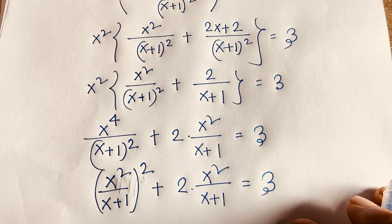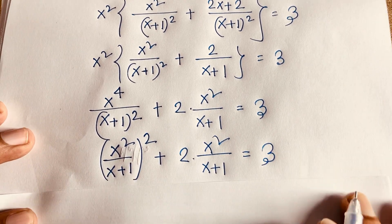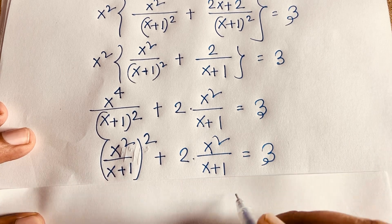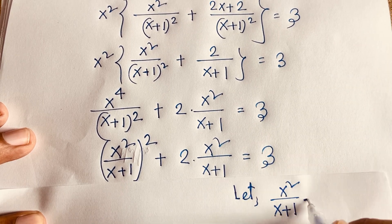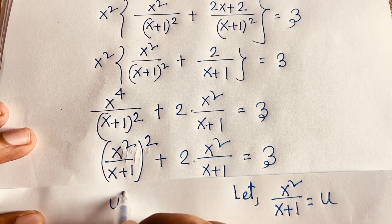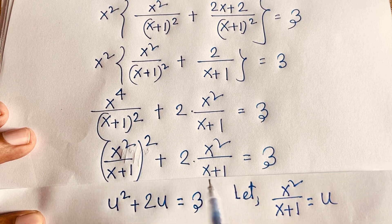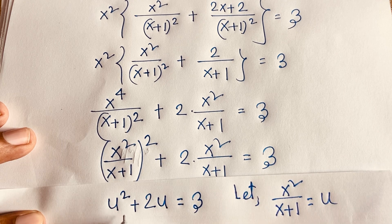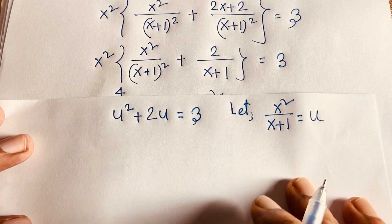We let u = x squared over (x+1). Substituting, the expression becomes u squared plus 2u equals 3. This is a quadratic equation in u.